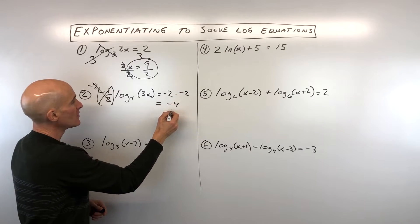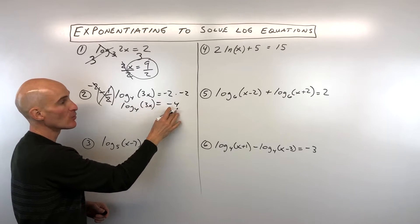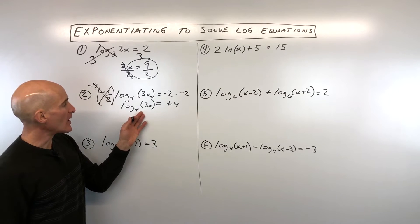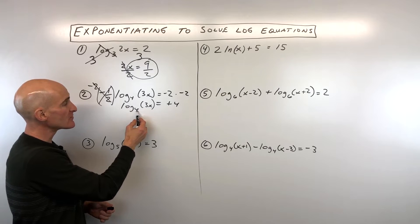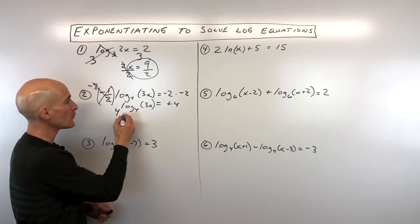So now what we're left with is log base 4 of 3x equals 4. Positive 4 because the two negatives cancel. Now what we want to do is we want to get that 3x by itself. So what's the inverse of taking the log base 4? Well, it would be to exponentiate both sides using base 4.